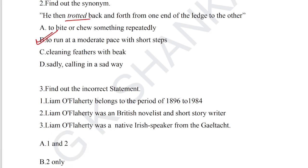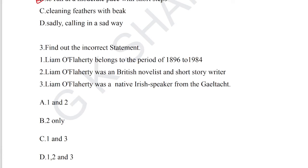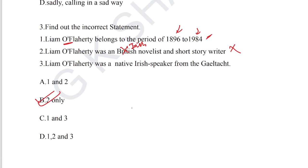Question number 3: find out the incorrect statement about Liam O'Flaherty who wrote 'The First Flight.' Statement 1: Liam O'Flaherty belongs to the period 1896 to 1984 — correct, he was born in 1896 and died in 1984. Statement 2: 'Liam O'Flaherty was a British novelist' — this is incorrect; he is an Irish novelist. So option B is the correct answer for question number 3.